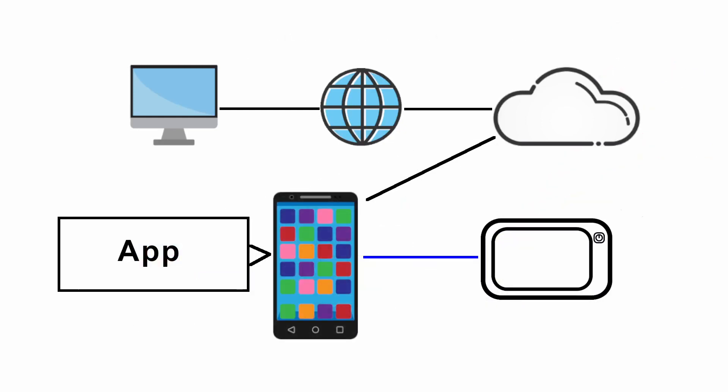Now let's go back. This is the Garmin digital infrastructure in a nutshell. You have a Garmin device and you have data in the cloud. A smartphone with an app connects the two.